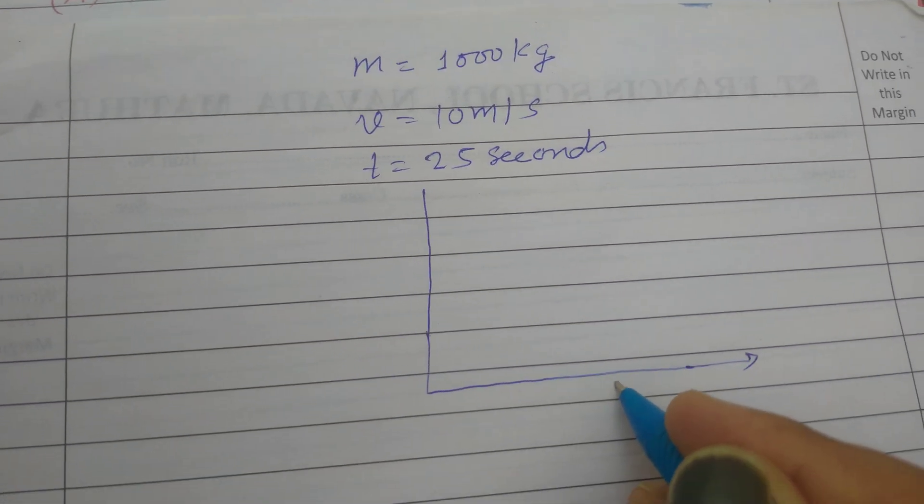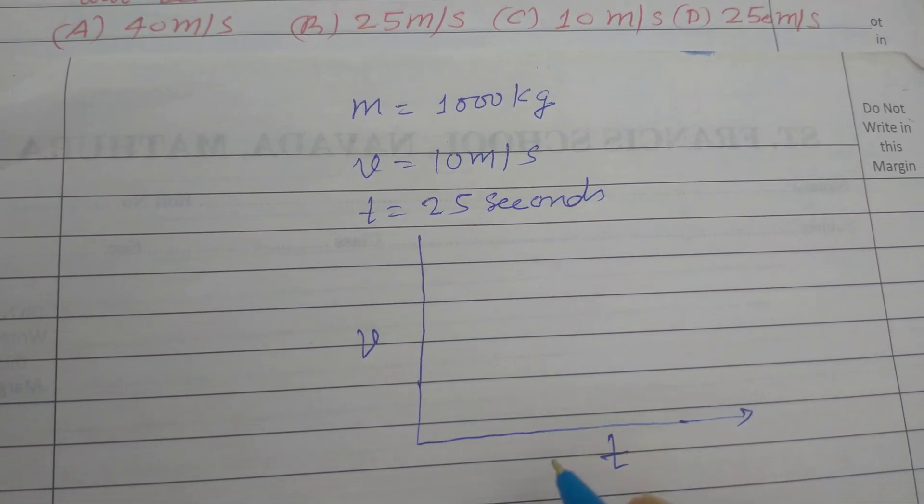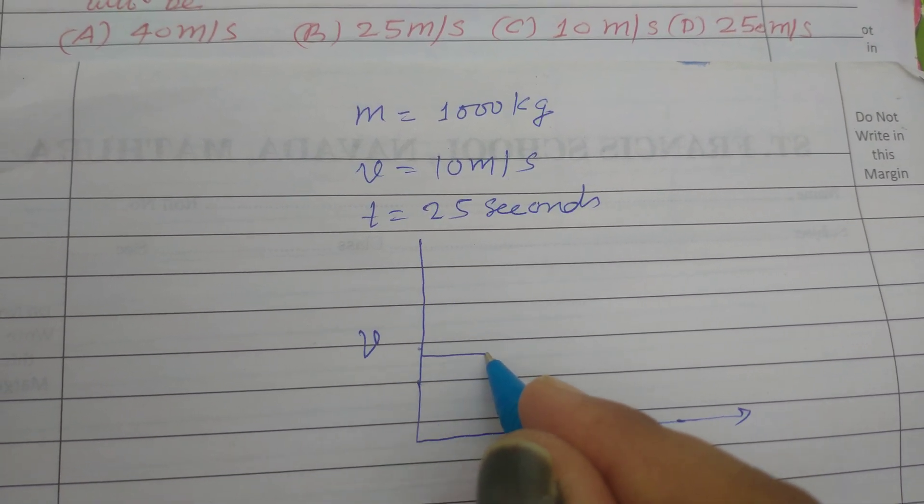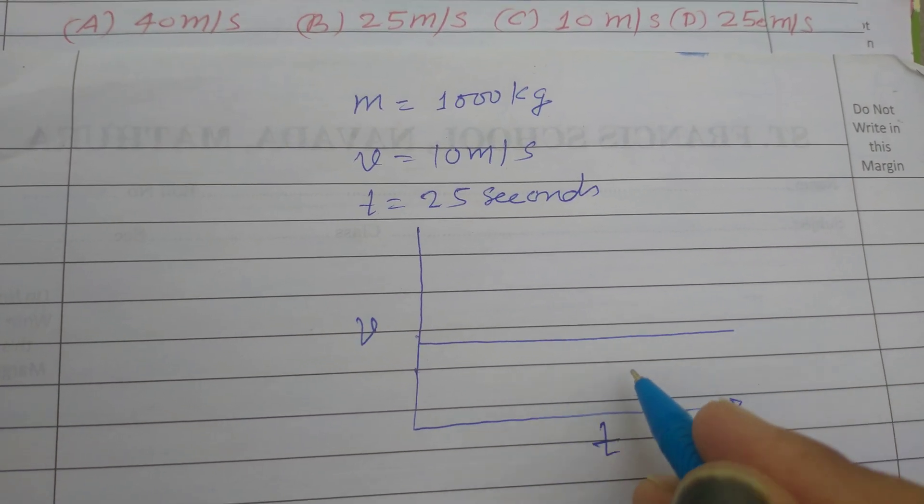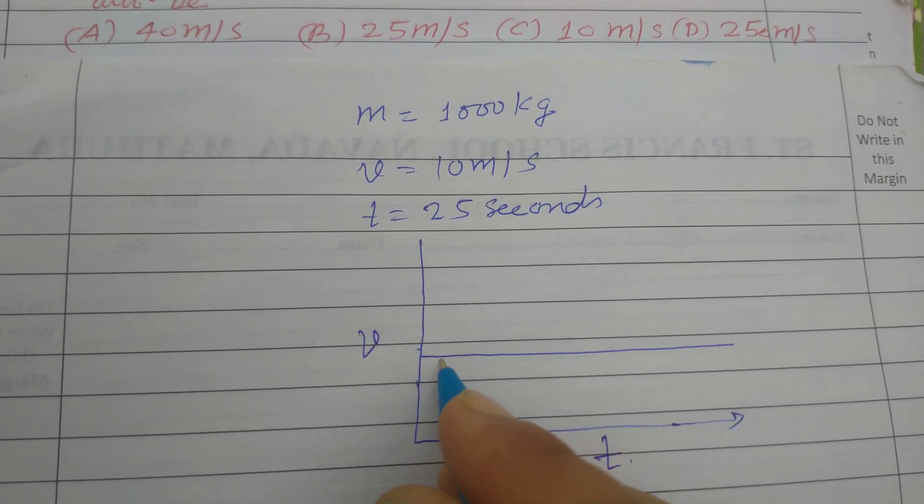So, here let it is time t and this is velocity v and this is a parallel line, horizontal parallel line to the time axis.